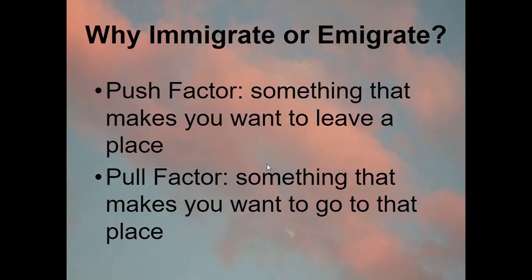Now we're going to talk about why people move. People immigrate and emigrate for two reasons: push factor and pull factor. Push factor is something that makes people want to leave a place. For example, if I'm in my home state of Kansas and I don't like tornadoes, or a tornado comes and destroys my home, I might think of moving to a different state. The fact that I don't like tornadoes or that tornadoes destroy property is the reason why I would leave Kansas.